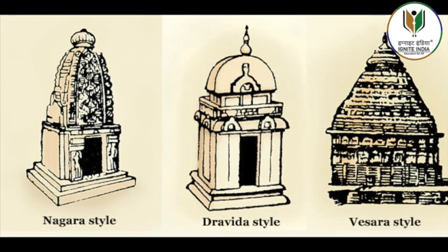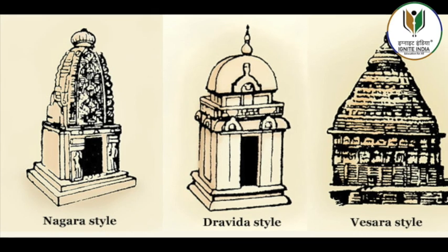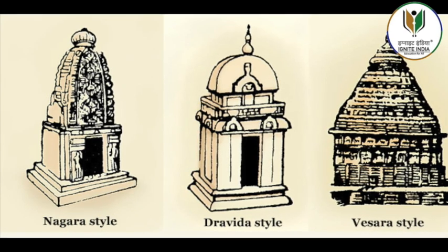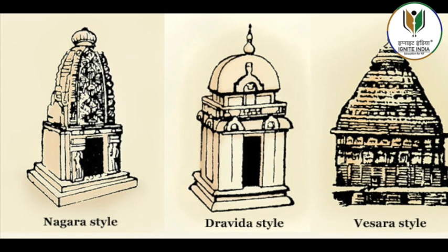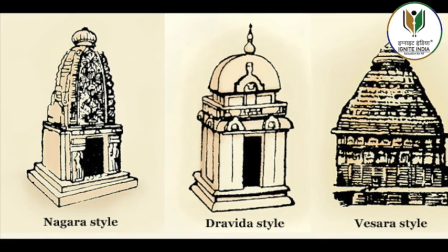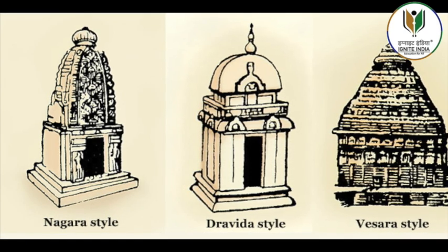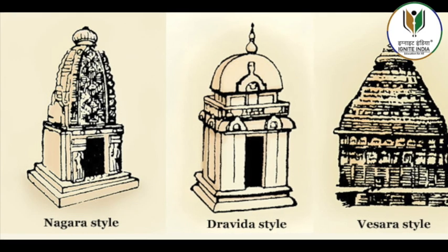In the Mughal period and later, scores of terracotta brick temples were built across Bengal and Bangladesh in a unique style that had elements of local building techniques seen in bamboo huts.